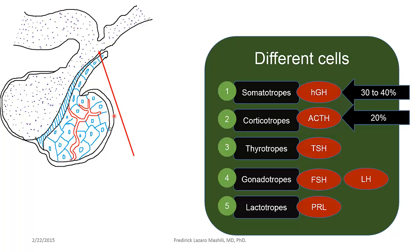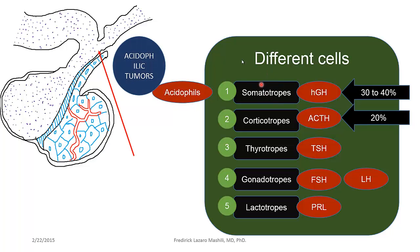The remaining thyrotropes, gonadotropes, and lactotropes occupy around five percent each. So the majority of cells within the anterior pituitary are growth-hormone-producing somatotropes. Another point to note is that when you stain somatotropes they stain with acidophilic dyes, and for that reason somatotropes are known as acidophils. This is clinically important because tumors that produce growth hormones are sometimes referred to as acidophilic tumors.